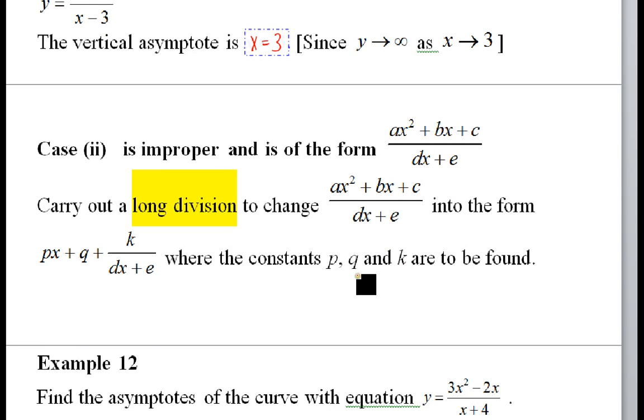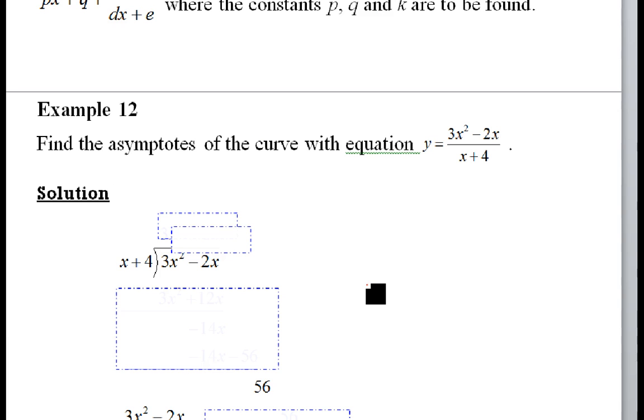Case two. Slightly different from case one. Case one is linear divided by linear. Case two is quadratic divided by linear. It's improper still. So then we do long division. In this long division, we can, I think, do together. Okay? We can do this together.